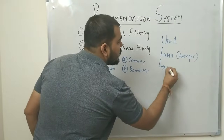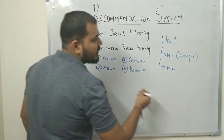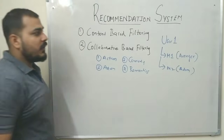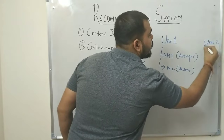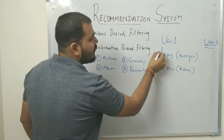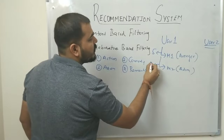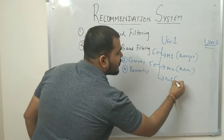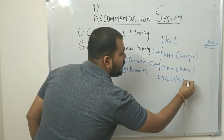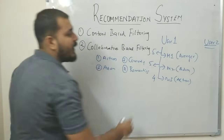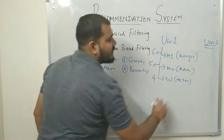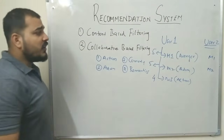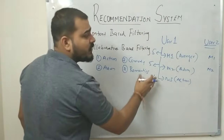User 1 has given a rating of 5 for M1 and 5 for M2. He also sees another movie M3, which is again an action movie, and gives it a rating of 4. Now suppose User 2 also watches M1 and M2.